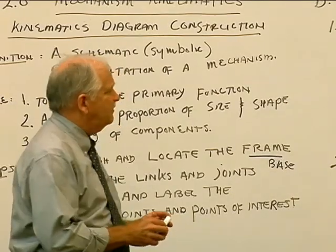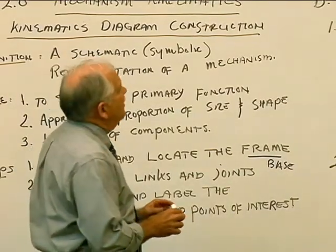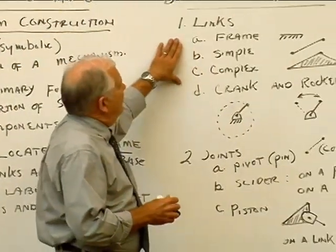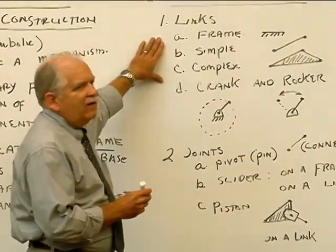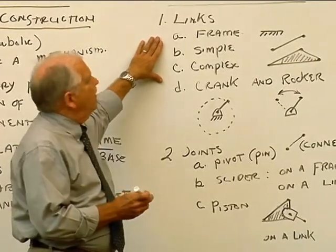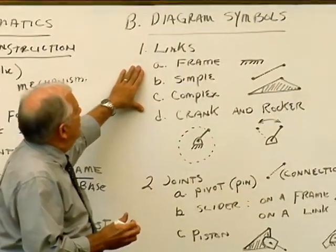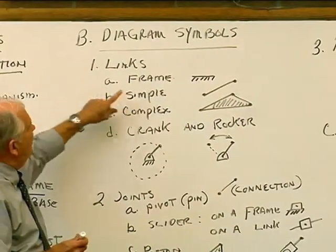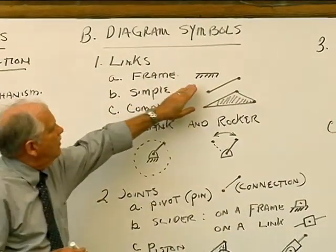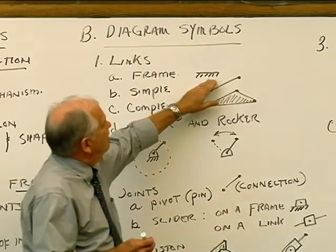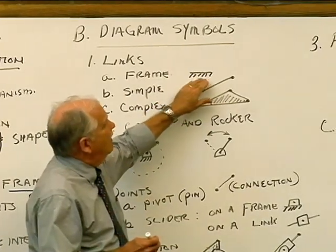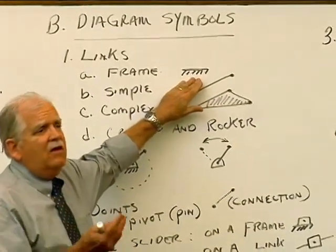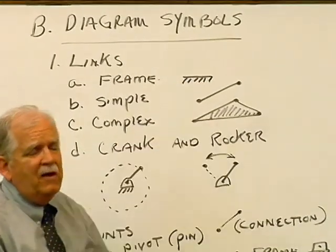Now, how is this done? These are the symbols. All the links can fall into these categories. First is the frame. The frame is nothing more than a straight line with a hatch symbol underneath it — this represents the base.